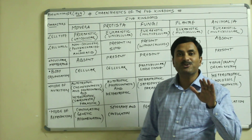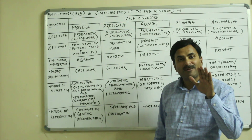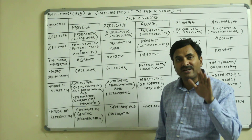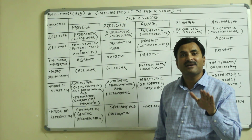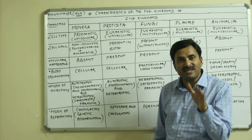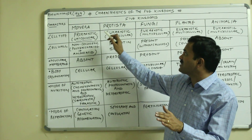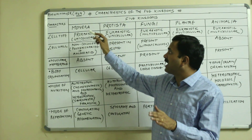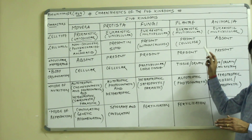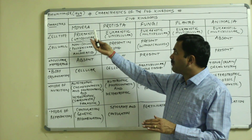Hello to all. Today we are going to discuss about the five kingdoms. The five kingdom classification was proposed by R.H. Whittaker in the year 1969. It is the most famous classification which is accepted nowadays, and the five kingdom classification suggests that there are five kingdoms: Monera, Protista, Fungi, Plantae, and Animalia.